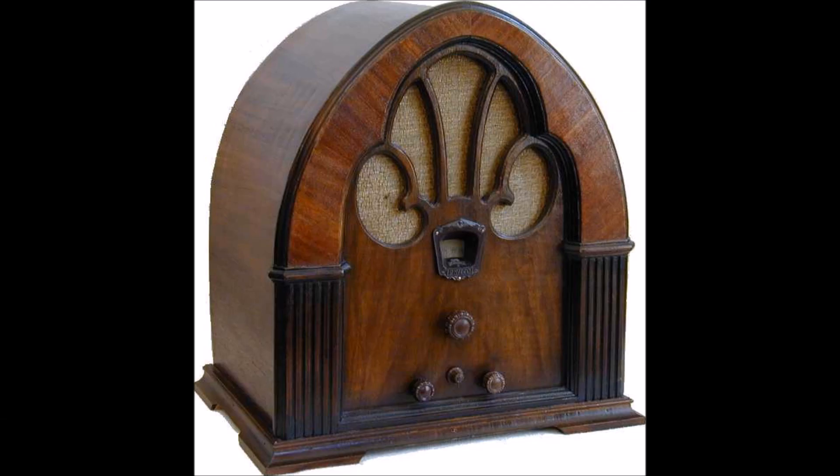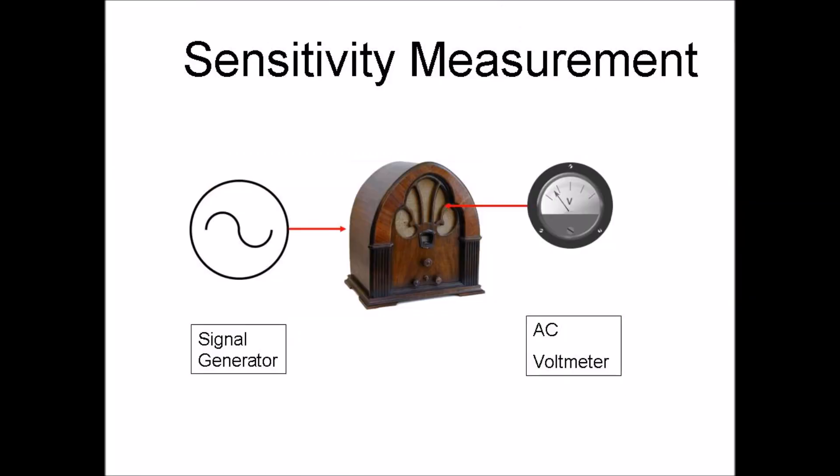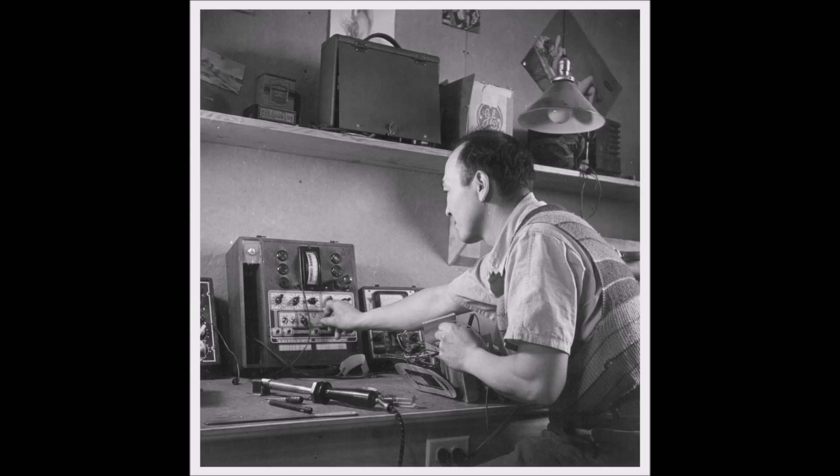In the days of analog receivers, it was a pretty straightforward process. You'd connect the signal generator to the antenna input of the receiver, crank the RF gain all the way up to maximize the sensitivity, and then measure the level of audio coming out of the speaker.